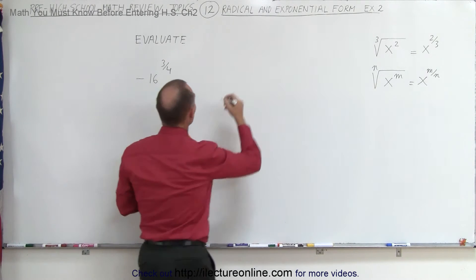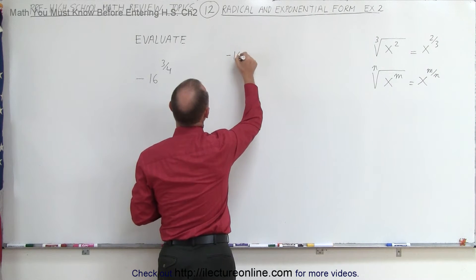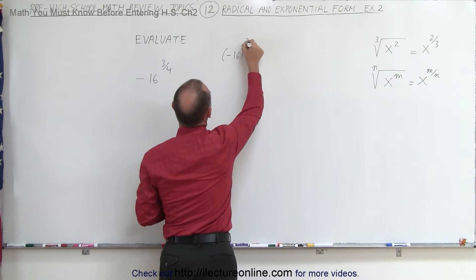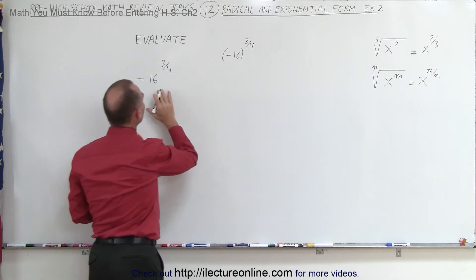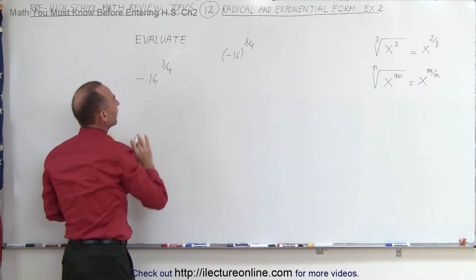If we had written it like this instead, minus 16 in parentheses raised to the 3 fourths power, now the negative sign would be affected by the exponent. But in this case, it's only affecting the 16.